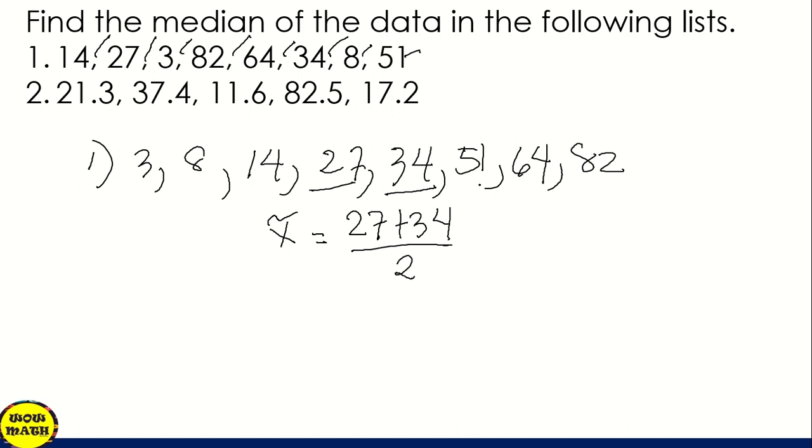27 plus 34, that is 61. So what is 61 divided by 2? The median is 30.5. So that's our answer for number 1. The median for number 1 is 30.5.